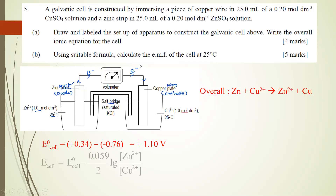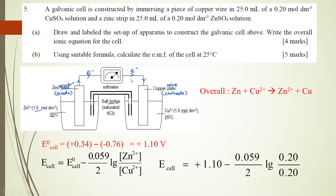Using the Nernst equation: E cell = E°cell − (0.059/2) × log([Zn2+]/[Cu2+]). Substituting 0.20/0.20 = 1, so log(1) = 0, and E cell still equals +1.10 V. You must show the full working to demonstrate how you obtained 1.10 V. That is how you calculate the EMF of the cell at 25°C.